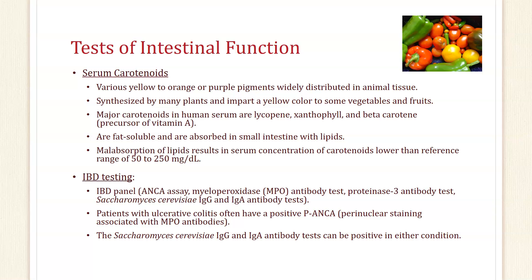For irritable bowel disorder testing, the IBD panel includes the ANCA assay, myeloperoxidase (MPO) antibody test, proteinase-3 antibody test, and Saccharomyces cerevisiae IgG and IgA antibody tests. Patients with ulcerative colitis will often have a positive pANCA with perinuclear staining associated with MPO antibodies. The Saccharomyces cerevisiae IgG and IgA antibody test can be positive in either Crohn's disease or ulcerative colitis.